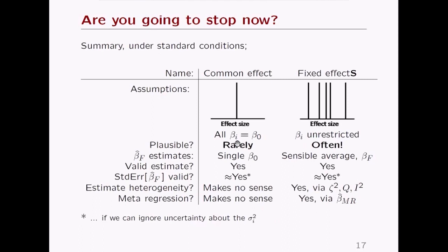To summarize the assumptions: the common effect model assumes everything is the same — valid inference but rarely plausible. The fixed effects model simply allows different effect sizes for each study with no restriction — essentially no assumption at all. We estimate a sensible average, get valid inference even in small samples, can estimate heterogeneity and do meta-regression — none of which is possible under the common effect model since homogeneity has already been assumed.